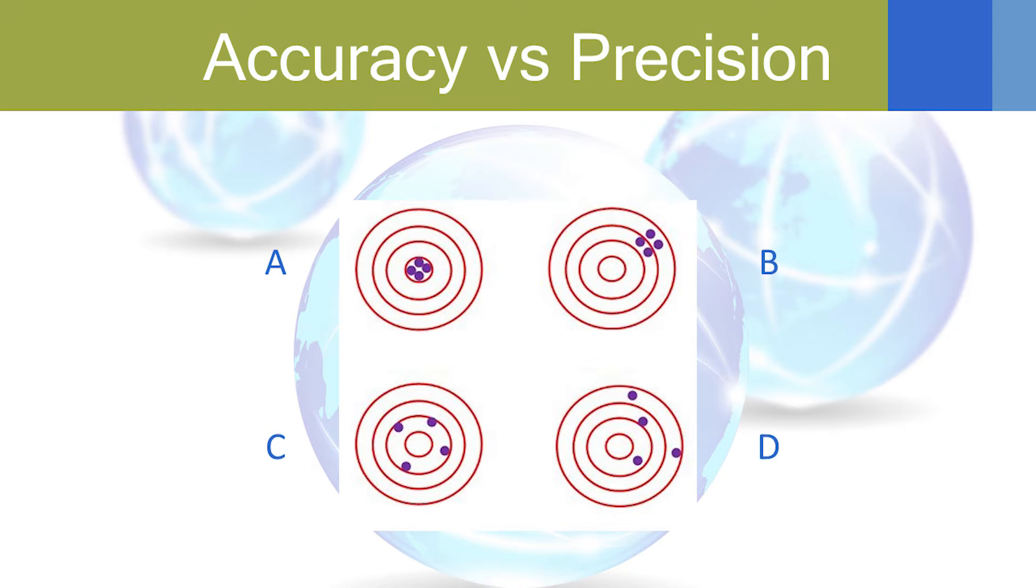So let's look at this in real world terms. We've got four bullseyes and going clockwise we'll say it's A B C and D. Which one is accurate and which one is precise? You know that C is not accurate and not precise and you know A is both accurate and precise. But what about B and D?